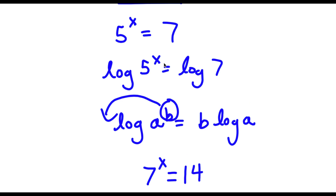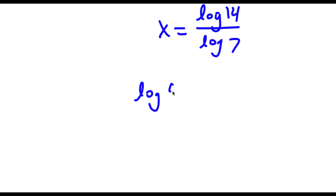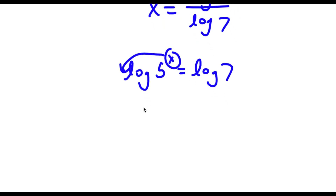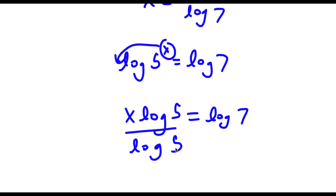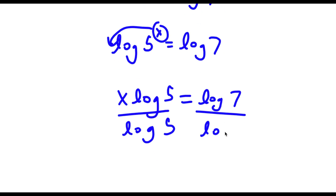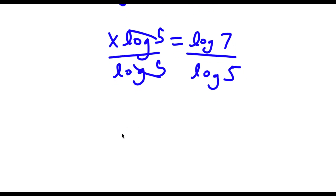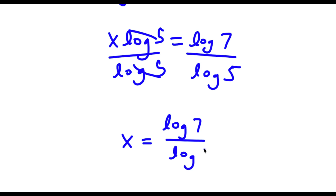So now I'm doing the same thing for 5 to the power of x is equal to 7. I had log of 5 to the power of x is equal to log 7. Now I can move x to the front, so I have x times log 5 is equal to log 7. Now I can divide both sides by log 5, and these two cancel out, leaving x is equal to log 7 over log 5.